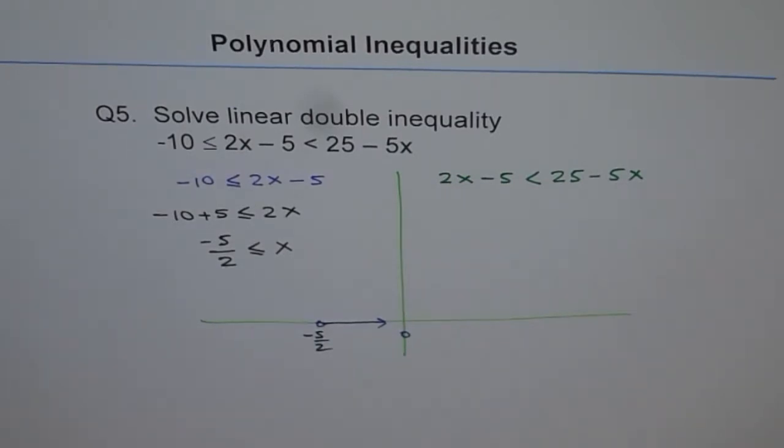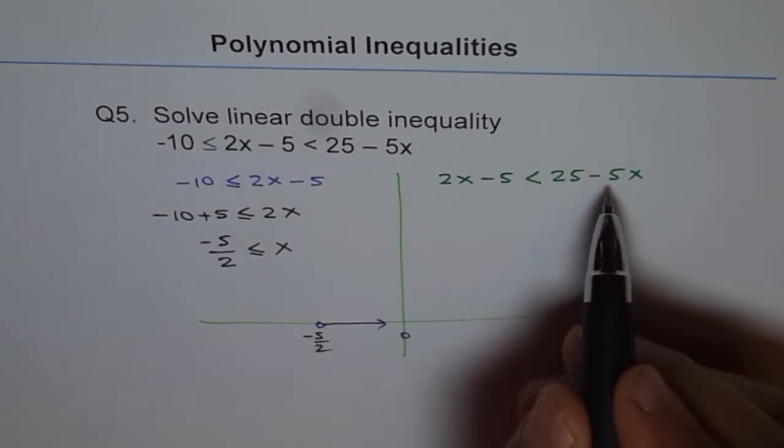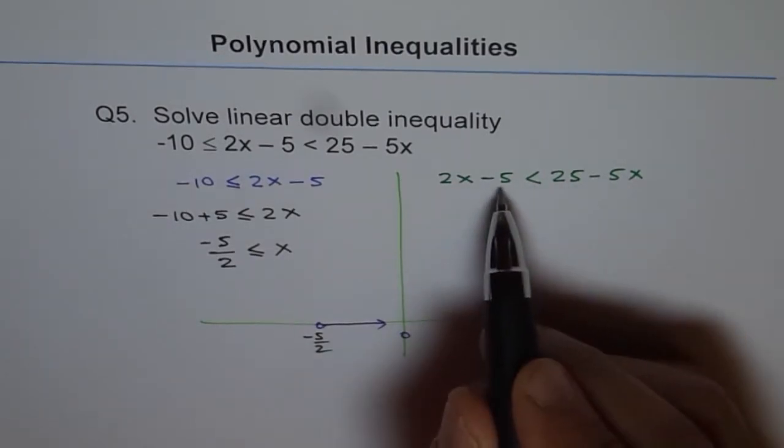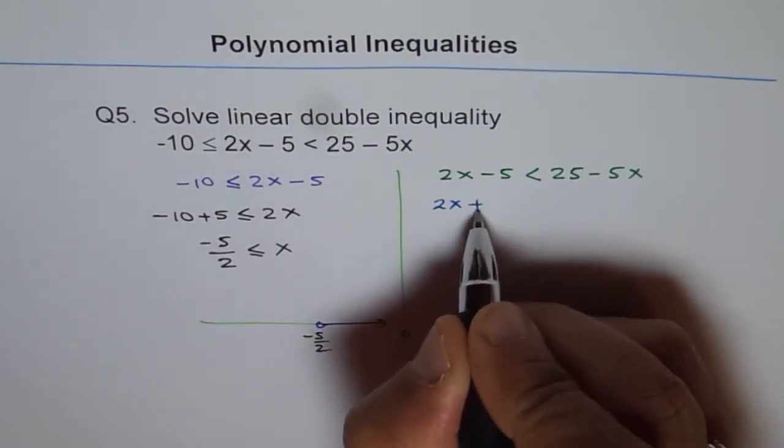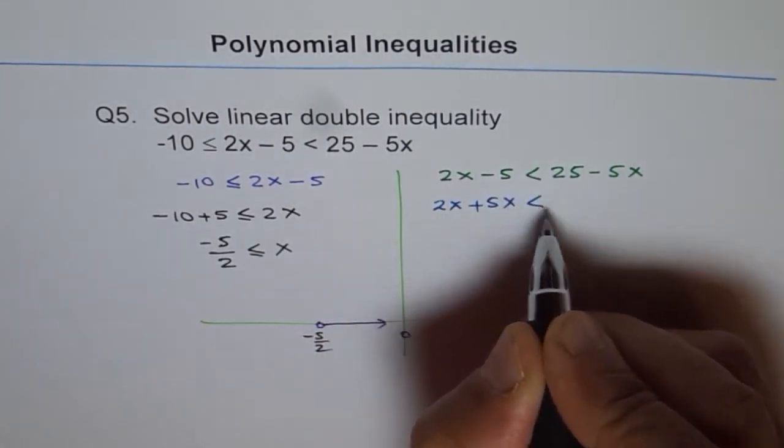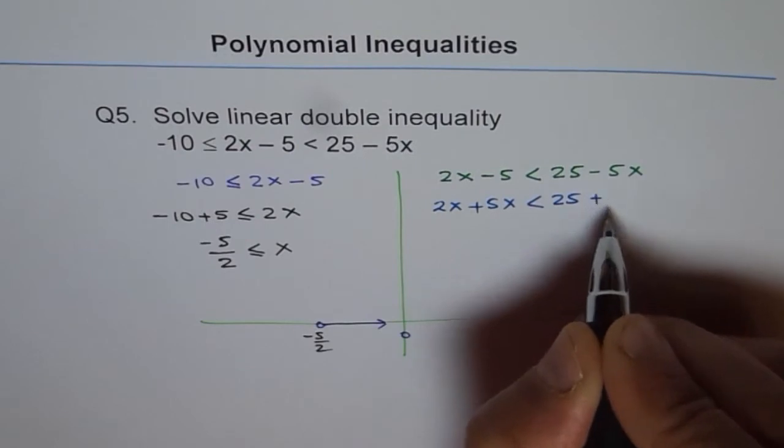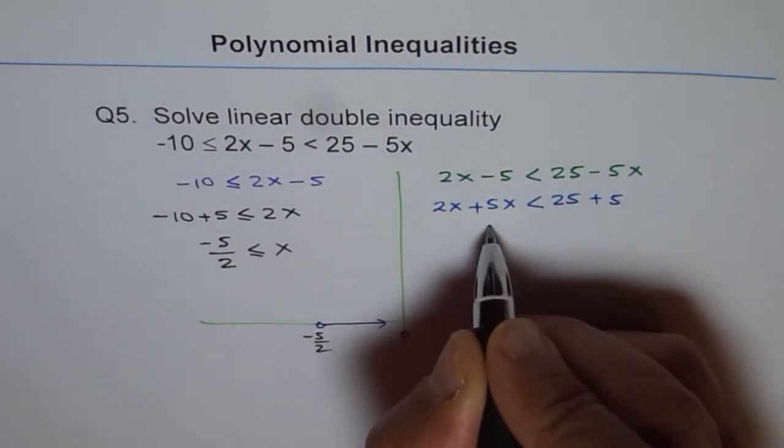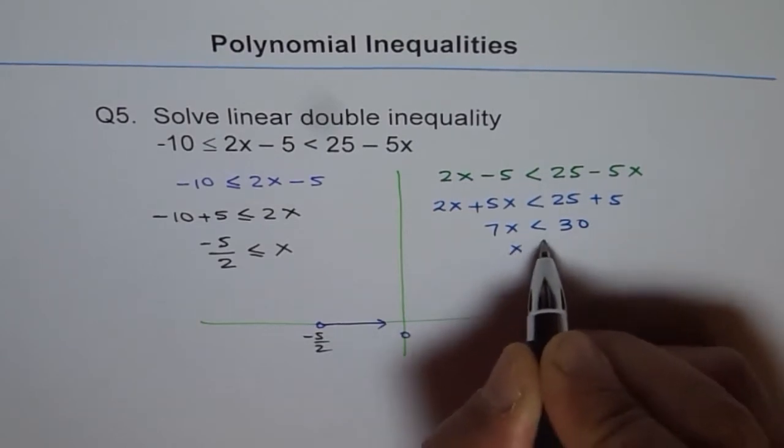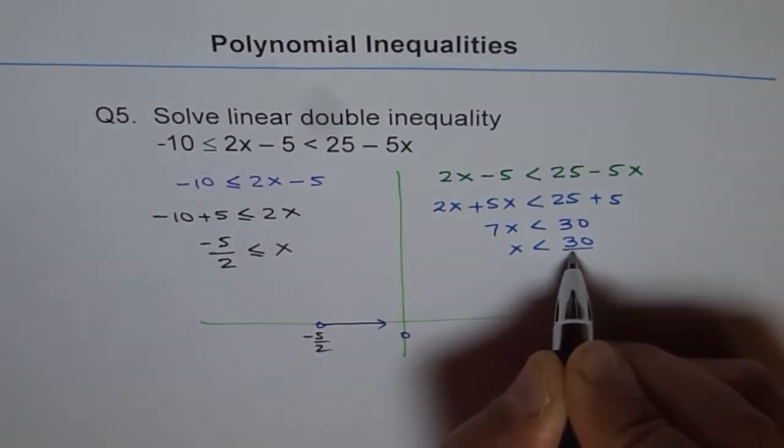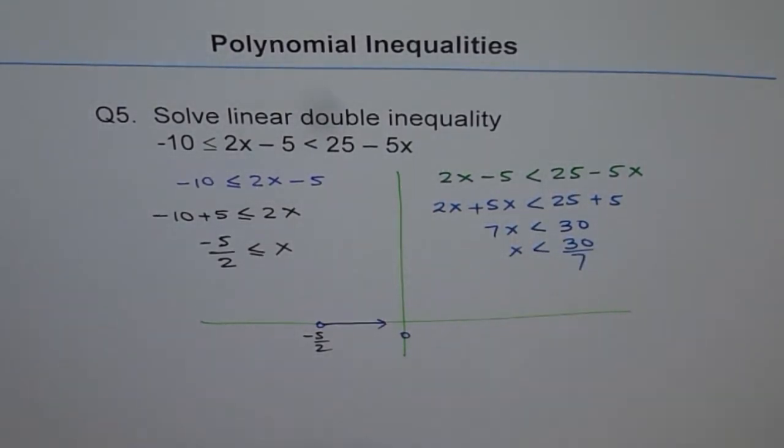Now on the other side, let's solve this. So now we have got x here. Let's bring x together and the constants on the other side. We have 2x plus 5x is less than 25 plus 5. So that is 7x is less than 30, or x is less than 30 over 7. So that is the solution on this side.